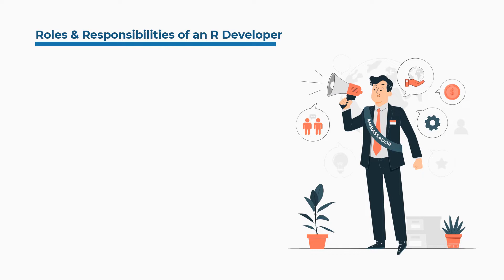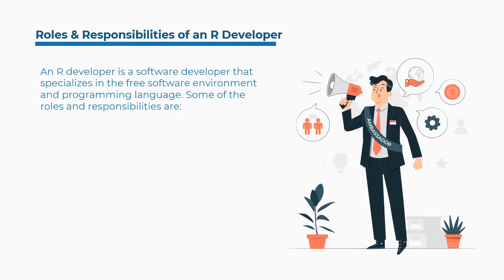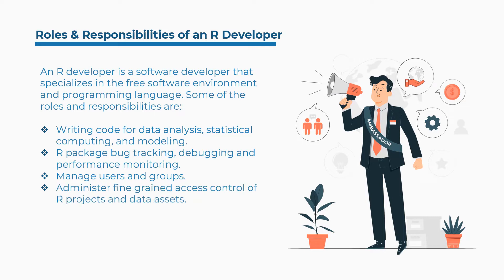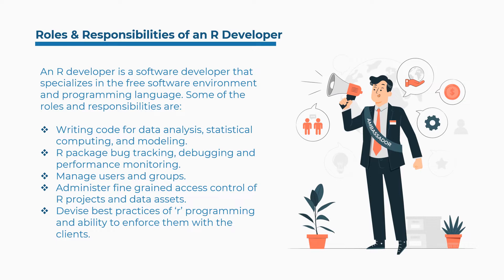Some of the roles and responsibilities of an R developer are: An R developer is a software developer that specializes in the free software environment and programming language. Responsibilities include writing code for data analysis, statistical computing, and modeling; R package bug tracking, debugging and performance monitoring; managing users and groups; administering fine-grained access control of R projects and data assets; and devising best practices of R programming and enforcing them with clients.